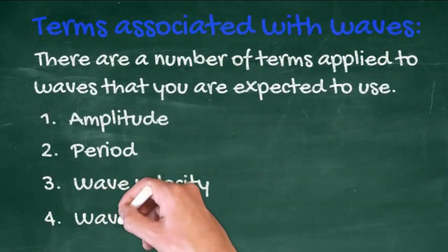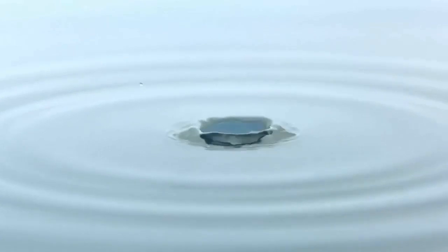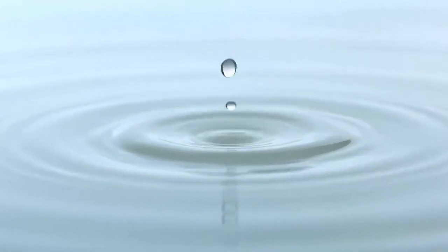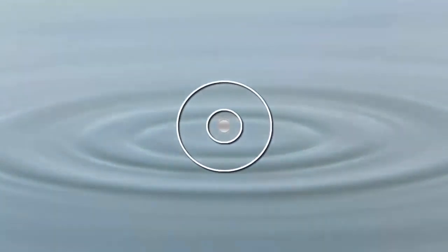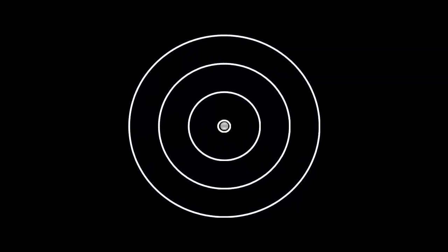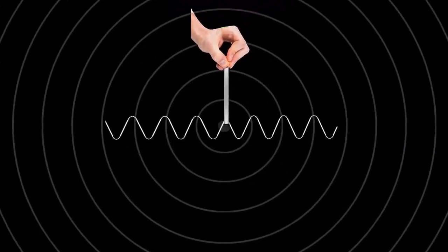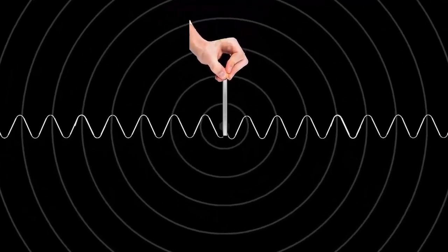Finally, the wave front: an area on the wave where all the peaks or all the troughs line up. We can view a ripple on a pond from above and represent it with a series of concentric circles, then superimpose on this the conventional wave diagram. The rings show the peaks of the wave, and these represent the wave fronts.